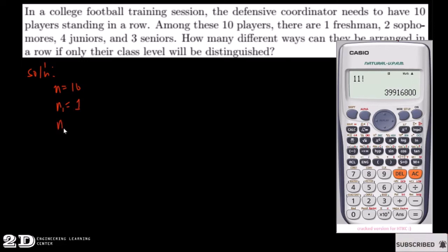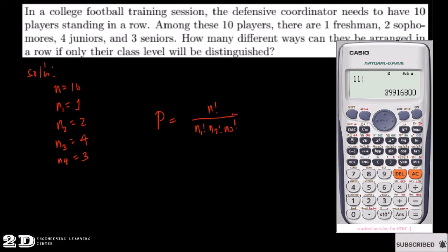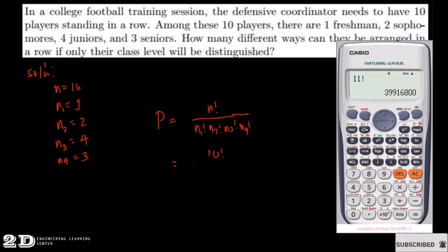We arrange depending on class level: n1 = 1 for freshmen, n2 = 2 for sophomores, n3 = 4 for juniors, and n4 = 3 for seniors. So the permutation P equals n! divided by (n1! · n2! · n3! · n4!), which is 10! over (1! · 2! · 4! · 3!).